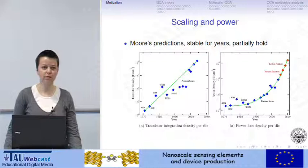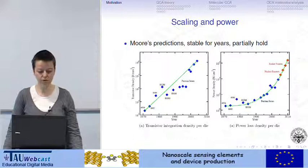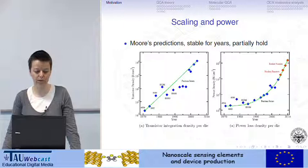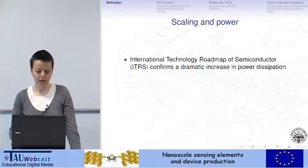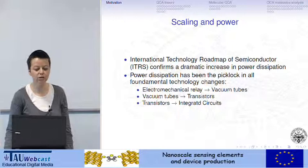In the last years, the amazing scaling down of transistors has given transistor density that allowed to pack a lot of functions in the same circuit and to achieve very high frequencies. But this has also been associated to a very huge power density. The international technology roadmap of semiconductors confirms a dramatic increase in power dissipation.